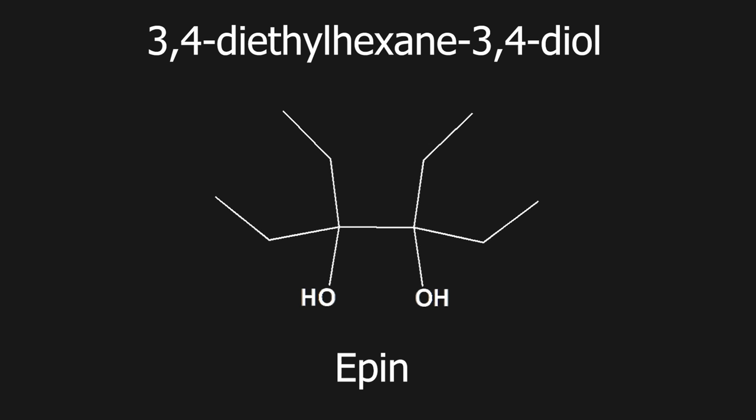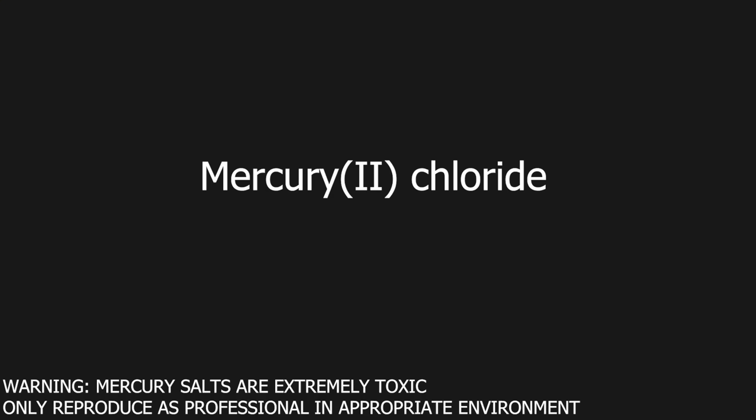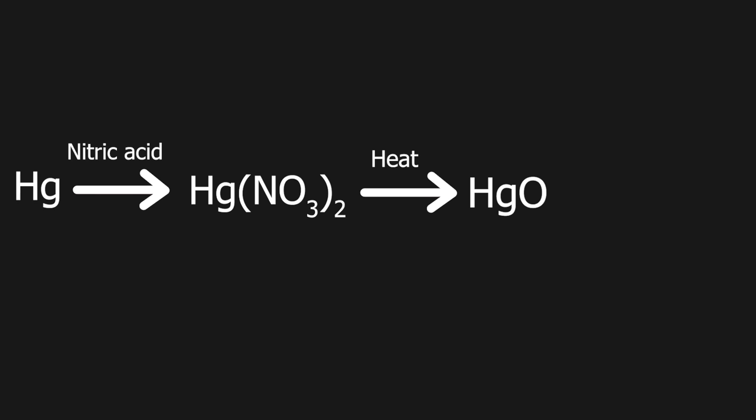For this, I needed to look in the dungeons of the internet for some specific literature and found a German procedure from 1993. But before I can start following it, I also need to prepare a reagent to make the EEPIN, which is mercury-2-chloride. To make the mercury-2-chloride, I can react metallic mercury with nitric acid to make mercury nitrate. This can then be decomposed to mercury oxide by heating it strongly. Afterward, I can treat the mercury oxide with hydrochloric acid to make mercury-2-chloride.